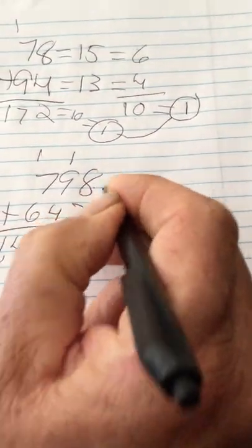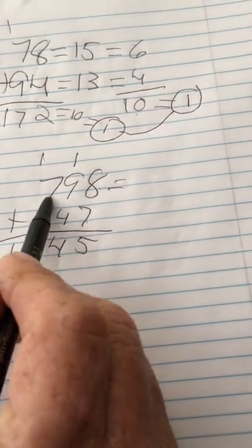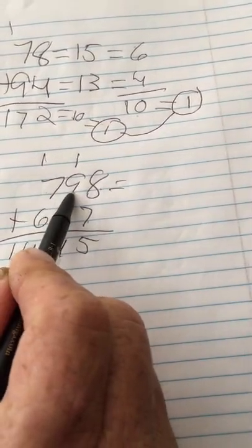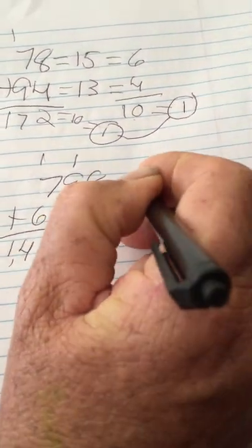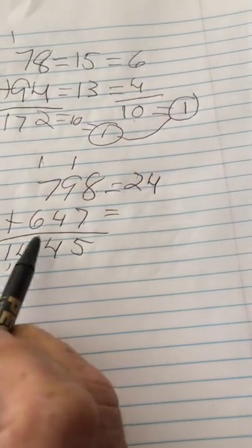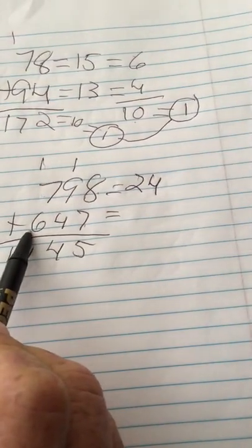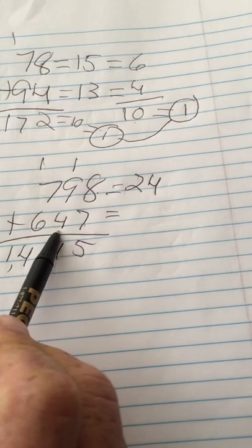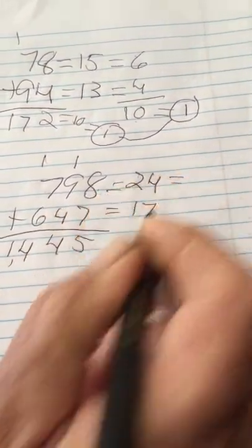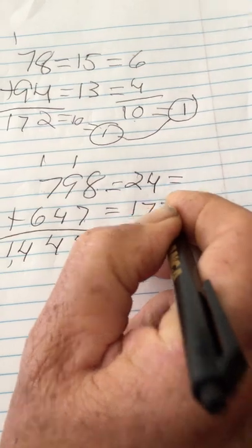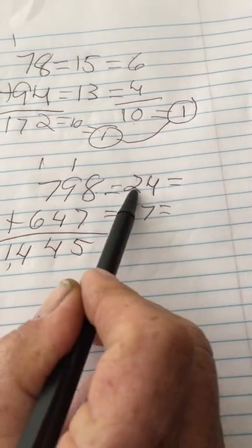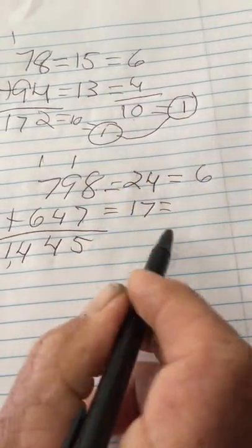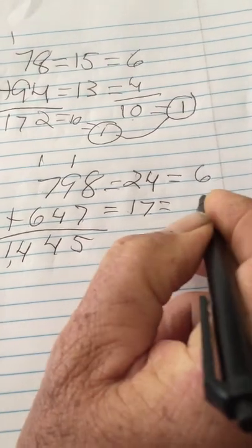7 plus 9 is 16. 16 plus 8 is 24. Now let's take 647. 6 plus 4 is 10. 10 plus 7 is 17. So let's take these two numbers and reduce them again to single digits. That's 2 plus 4 equals 6. 1 plus 7 equals 8.